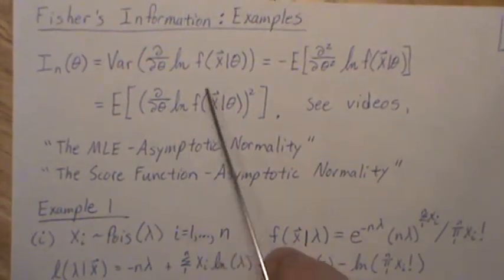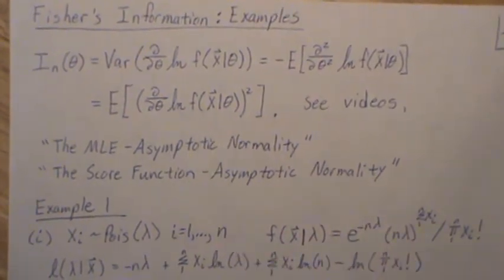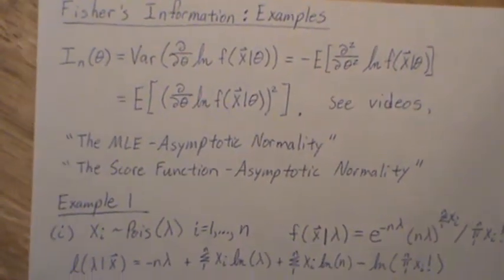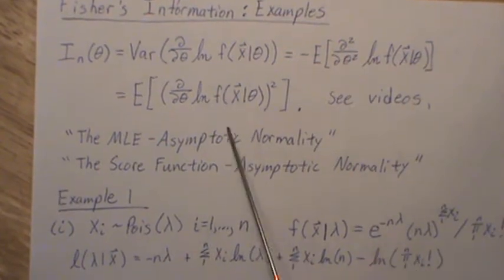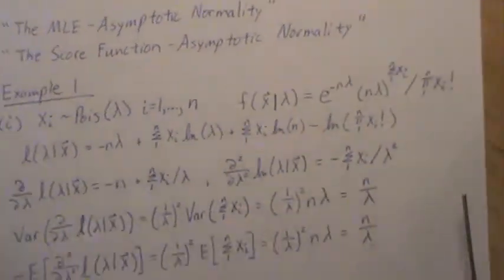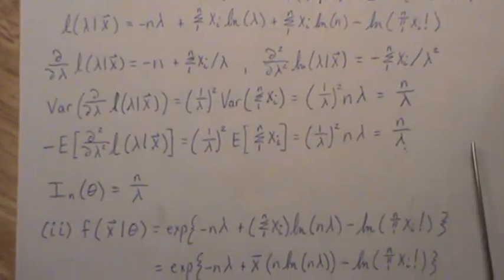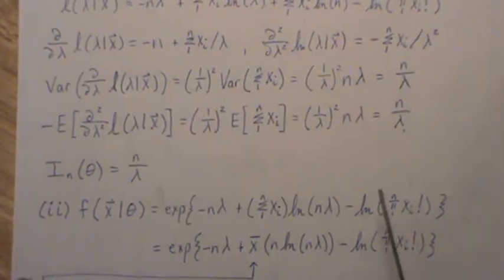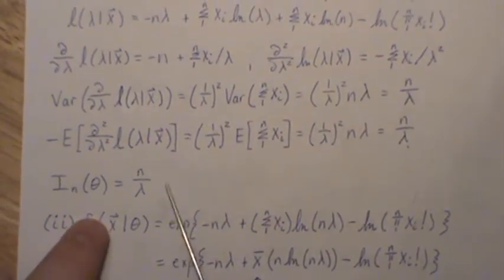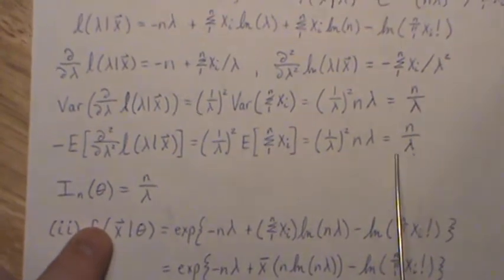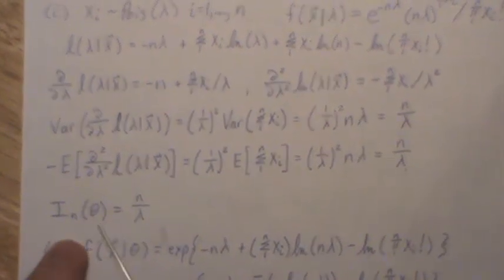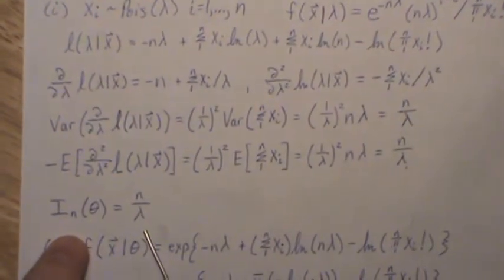They equal each other because the formulas tell us they're all the same. We're using more than one formula because sometimes it's just easier to use one versus the other. So this is the Fisher information for sample size n.